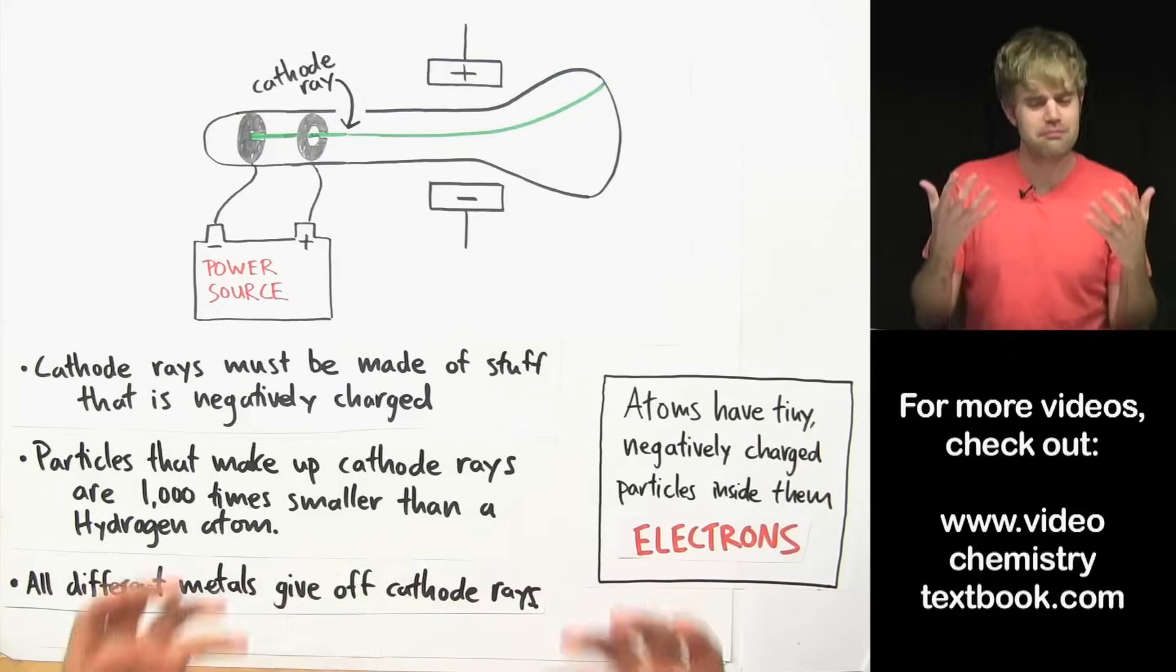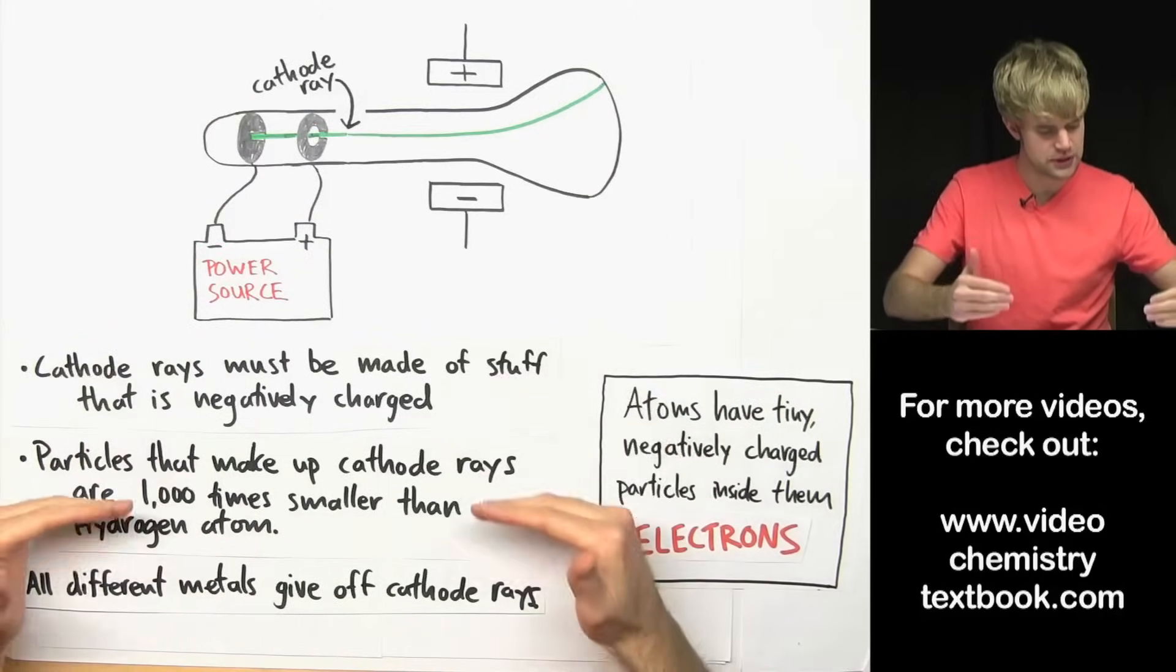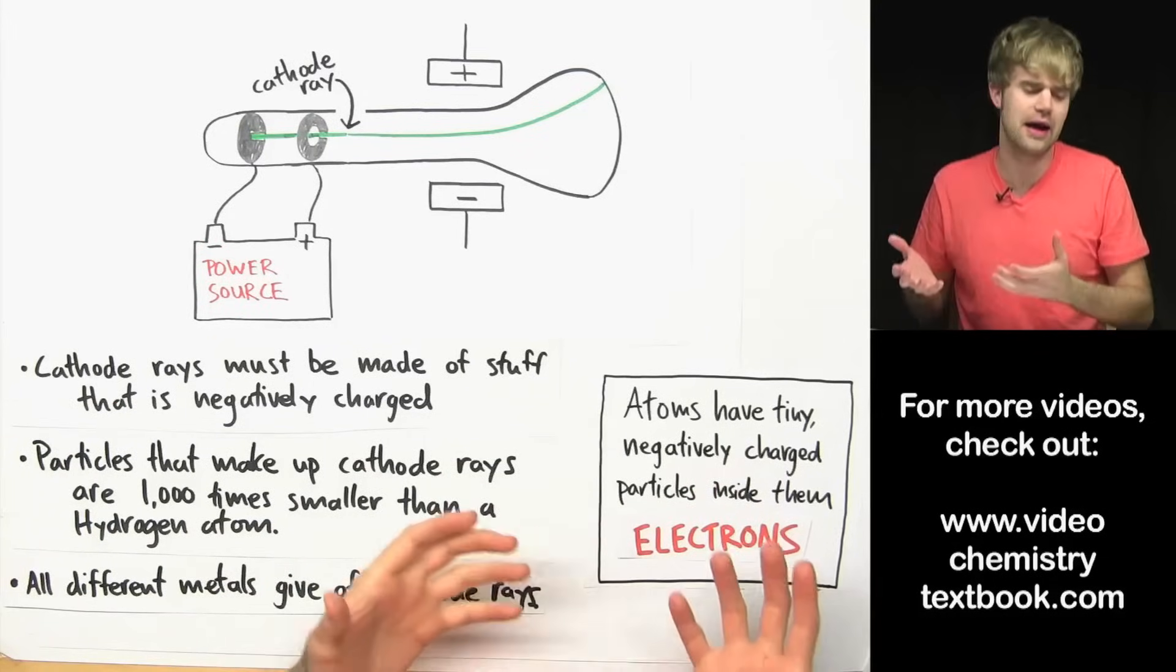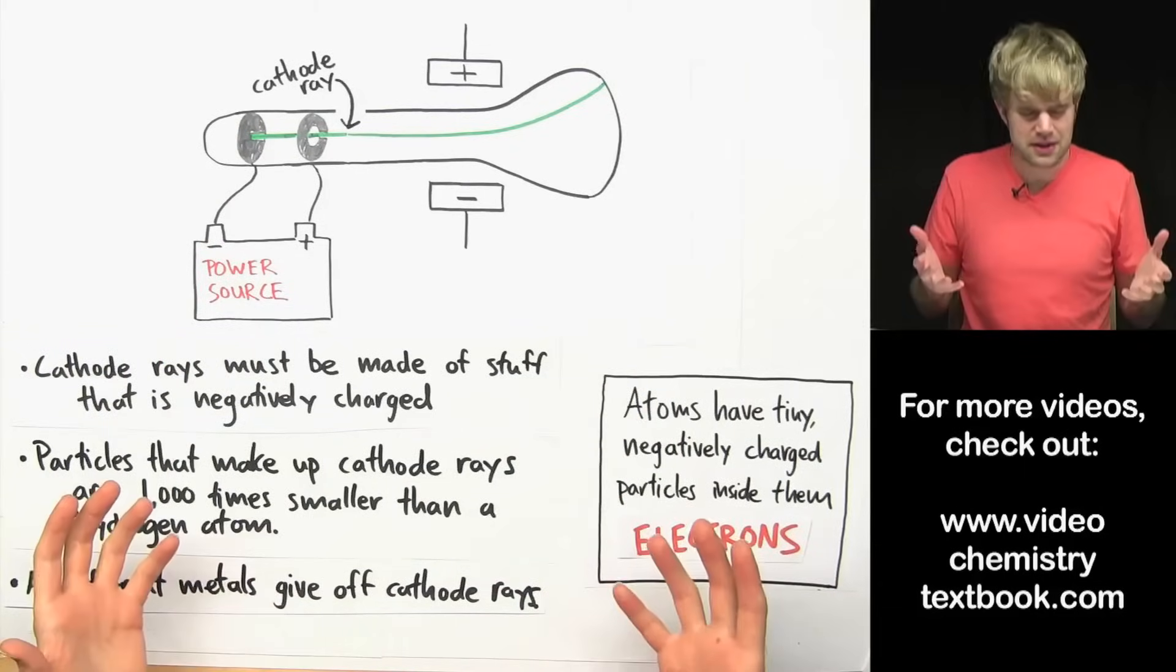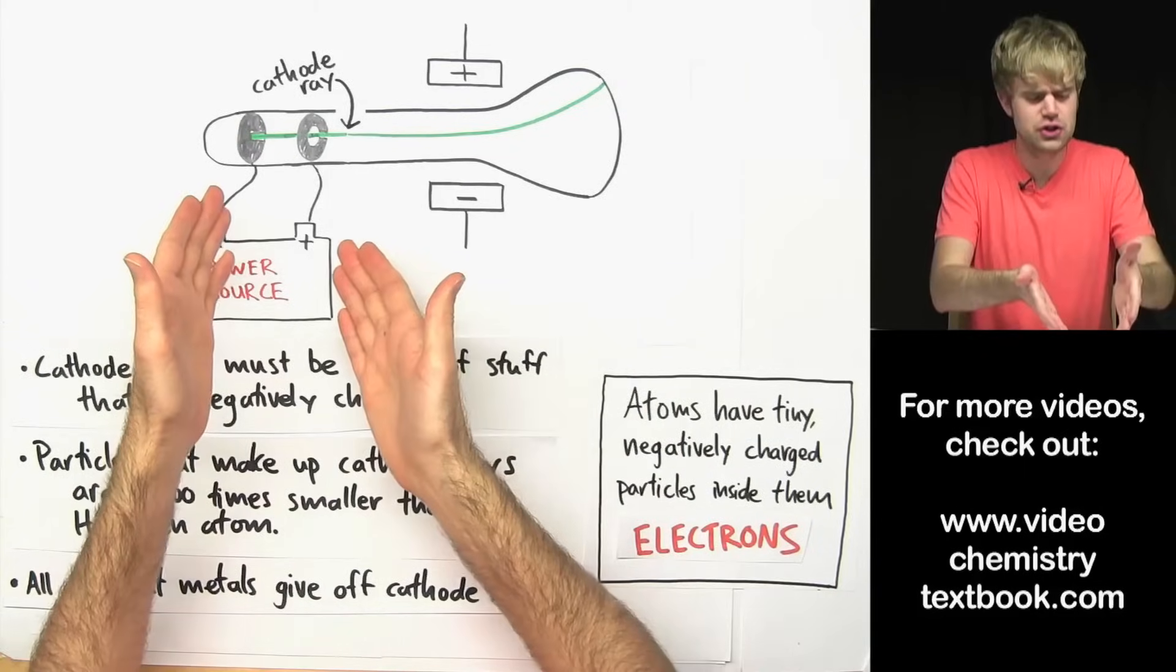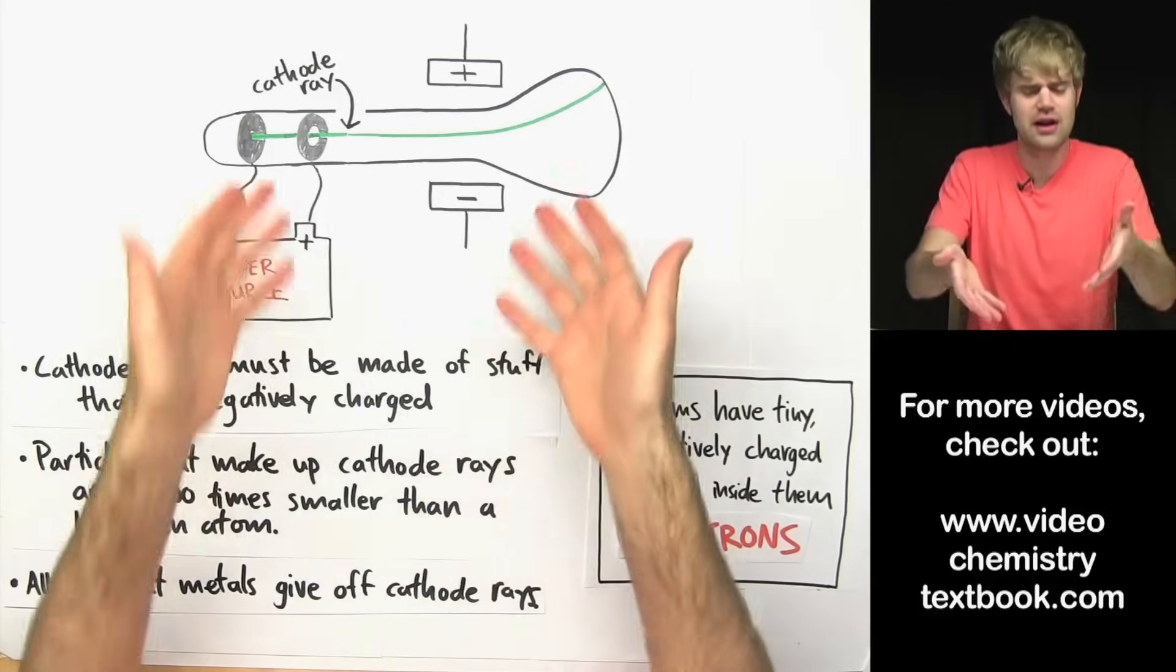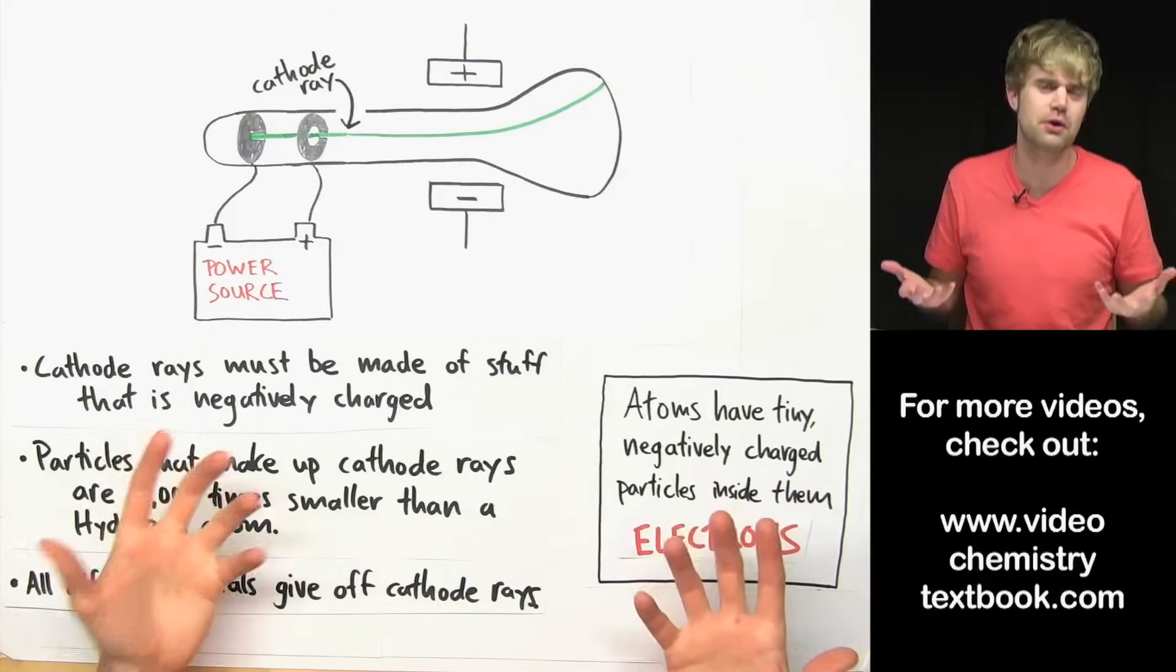Now, if you're like me when I first learned this, you might be confused how these conclusions definitely tell him that there are electrons inside atoms. I remember when I first learned this stuff, I was thinking like, wait, doesn't this just show that electricity or cathode rays have negatively charged stuff? How does this tell us anything about the atoms?